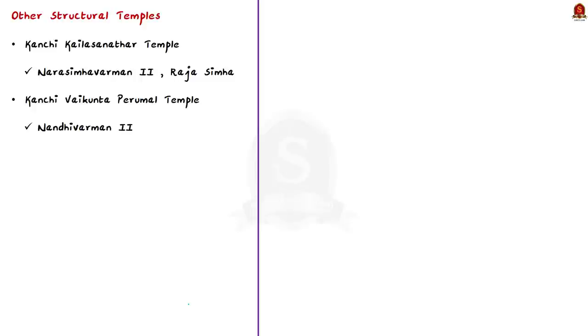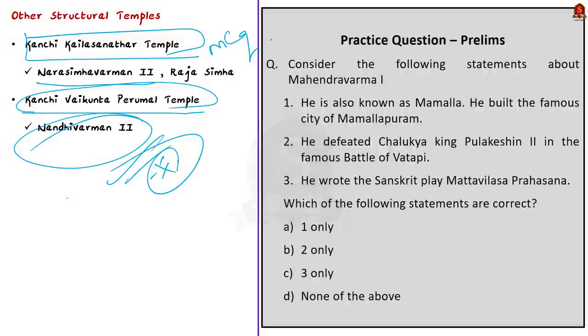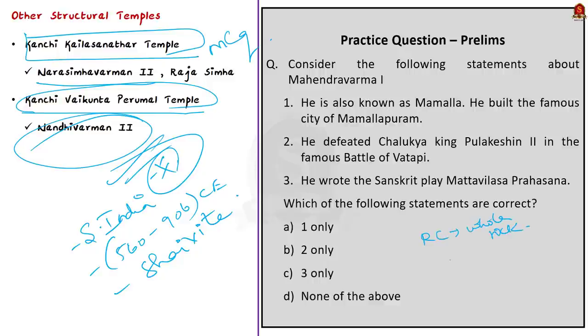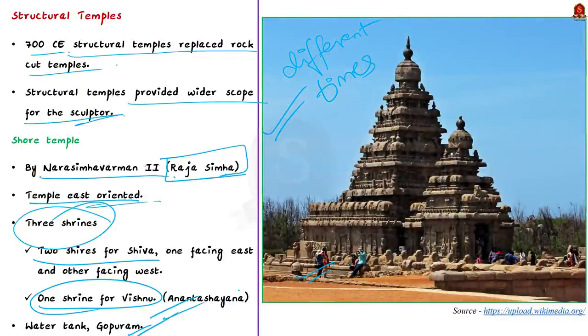In the shore temple compound there is evidence of a water tank and an early example of Gopuram. In addition to the shore temple, Narasimhavarman II also built the Kanchi Kailasanatha temple. Another structural temple of this era is the famous Kanchi Vaikunta Perumal temple built by Pallava king Nandivarman II. We have seen about Pallava architecture, how Pallavas ruled northern Tamil Nadu called Tondai Mandalam from approximately 560 CE to 906 CE. We saw the difference between rock cut and structural temples, Mandagapattu temple, Pancha Pandava Rathas, Arjuna's penance, and the famous shore temple.